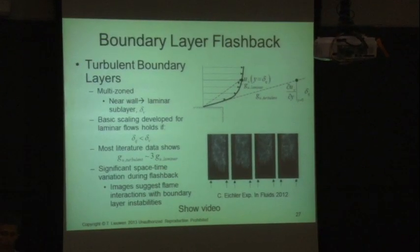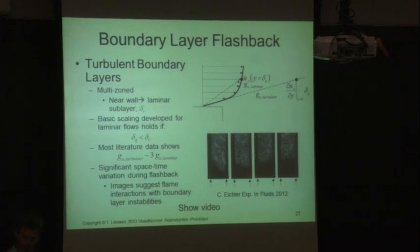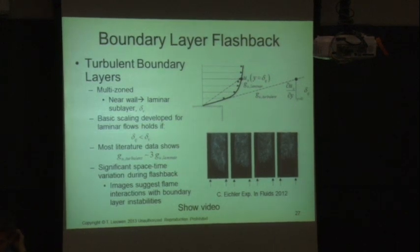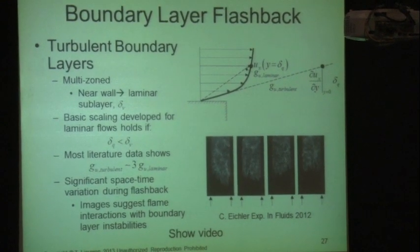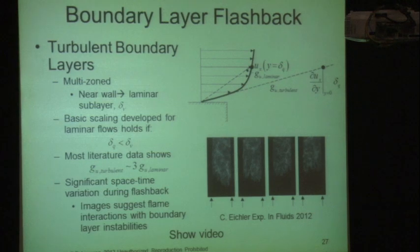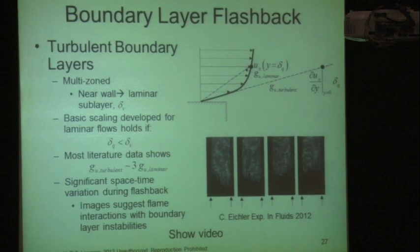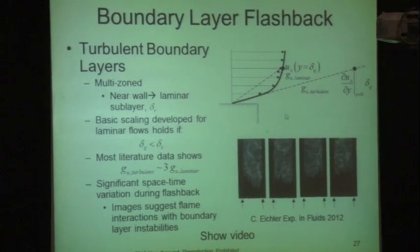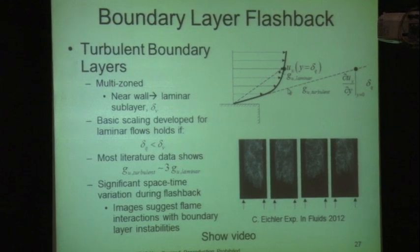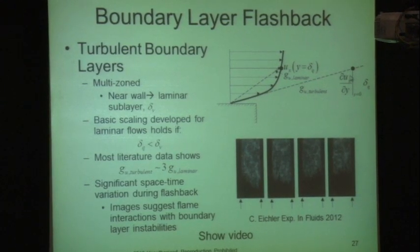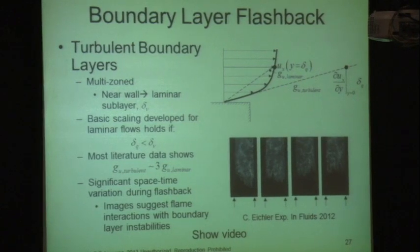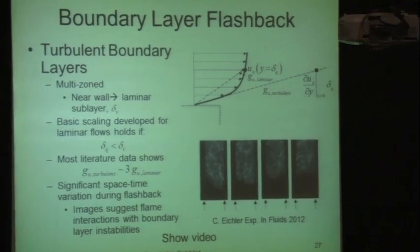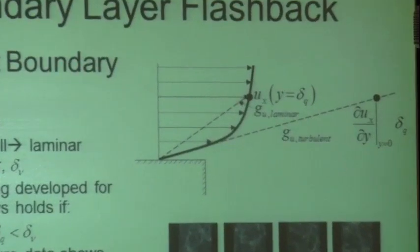One more thing about turbulent boundary layers: they are highly unsteady and have multiple zones — a viscous sublayer, a log layer. If the flame is stabilizing outside of the viscous sublayer, the Taylor series expansion may break down and not be a good approximation for the velocity at the quenching point.